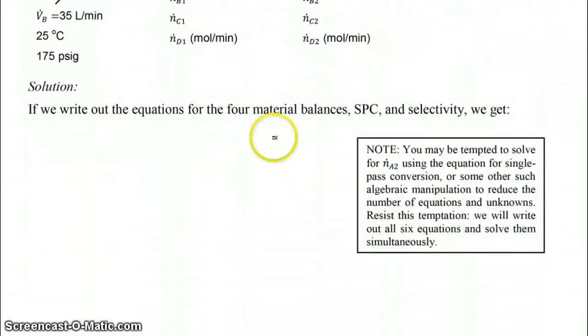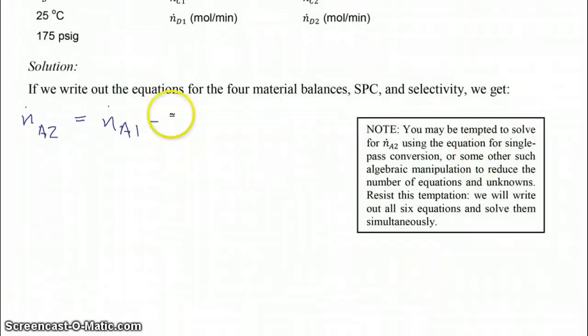To do this, we want to first write out our four material balances, our single pass conversion equation, and our selectivity equation. For our material balance for A, we have the molar flow rate of A coming out equals that coming in minus the two extents of reaction.